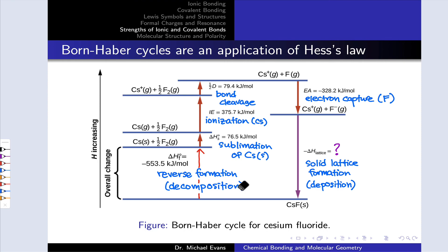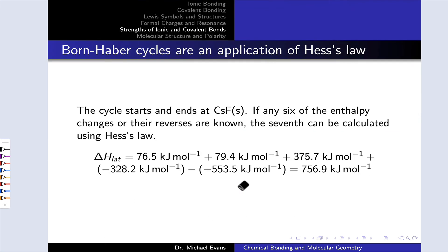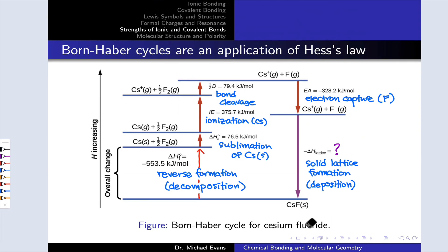So those enthalpies are listed on this slide, and on the next slide, to determine the lattice energy, all we do is take those individual enthalpy values for the steps and add them together, as we would in a Hess's law sort of problem. We've got a process that goes from point A to point B via a series of steps. We can add up those steps and add up their enthalpies to determine the enthalpy of the overall process.